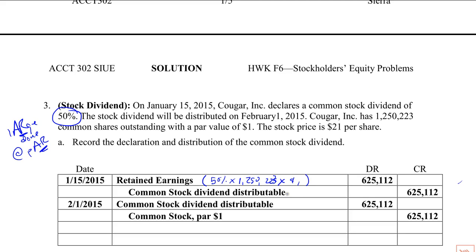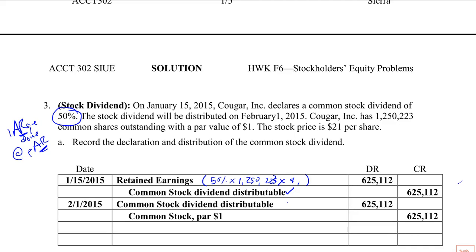We don't have a payable account. We have a common stock dividend distributable that's credited. Why is it a distributable? It's distributable and not payable because we're not transferring an asset or freeing someone up from a liability. All we're doing is taking a pizza and cutting it from four pieces into eight, and so forth. We call it a distributable because we're not going to reduce total assets or total stockholders' equity to make good on this transaction.